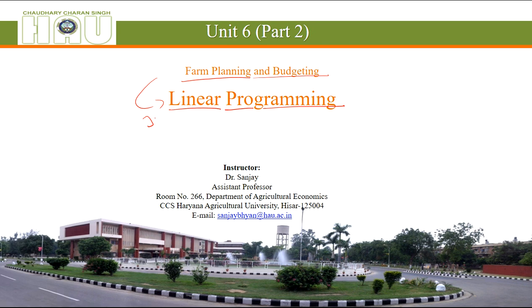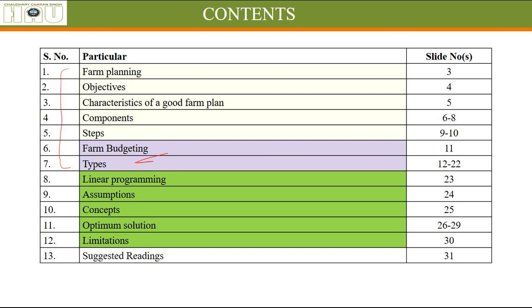We have already completed two types of budgeting: partial budgeting and complete budgeting. Now we will go through Linear Programming — what it is, its assumptions and concepts, and how we find the optimum solution according to the limitations of the farmer and the limitations of this programming technique.